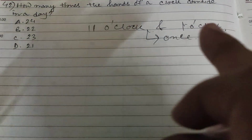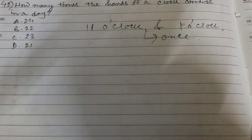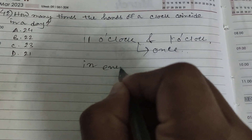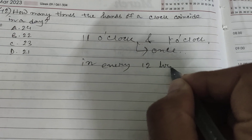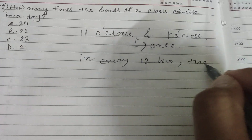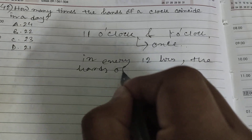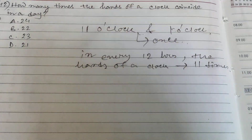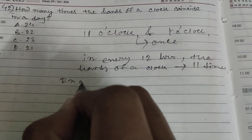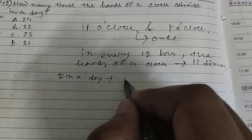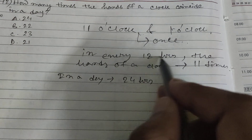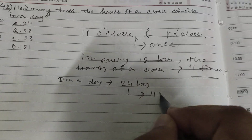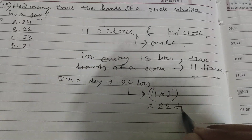So between 11 o'clock and 1 o'clock, the hands of a clock coincide only once. So in every 12 hours, the hands of a clock will coincide 11 times. In a day — that means 24 hours — in 12 hours it's 11 times, so in 24 hours it's 11 times 2, which equals 22 times.